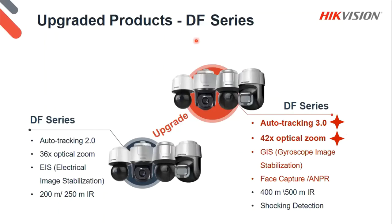What upgrades were made to the DF series PTZs? Auto tracking upgraded from 2.0 to 3.0 — a big one. Optical zoom upgraded from 36x up to 42x optical zoom — fantastic long-range zoom. Image stabilization moved from electronic (software-based) to hardware — a gyroscope inside the lens providing optical image stabilization. IR upgraded from 200/250 meters (depending on unit) up to 400 and 500 meters. Overall much more robust on these devices — fantastic upgrades for the DF series domes.